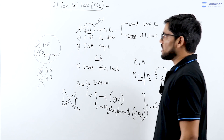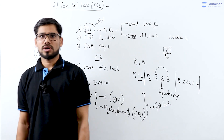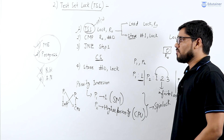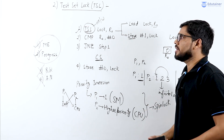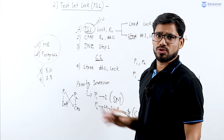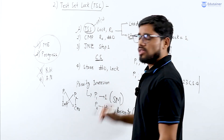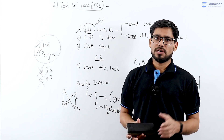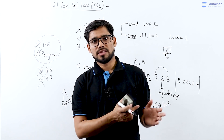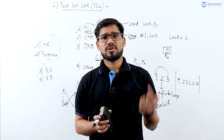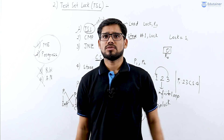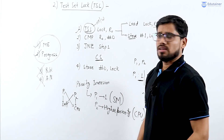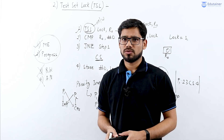Test-Set Lock is much better compared to the lock variable solution, but it also has some drawbacks. It is still a busy-waiting solution. We are discussing synchronization mechanism techniques based on busy-waiting solutions first, and after completing them we will talk about non-busy-waiting solutions. In the next video, we will see the next busy-waiting solution provided by synchronization mechanism technique.